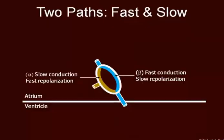In the AV node, there are two pathways: a fast pathway and a slow pathway. Described here in blue is the fast pathway, and here in brown we see the slow pathway. Signals can come in through these fibers or they can come in through these fibers. The fast pathway also has a slow repolarization, whereas the slow conduction pathway repolarizes rapidly.